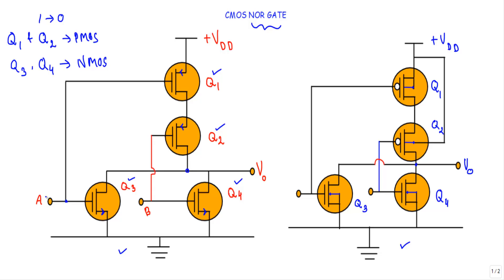The gate terminals of transistors Q1 and Q3 are connected together, and we are applying logical input A at that terminal. The gate terminals of transistors Q2 and Q4 are connected together, and we are applying logical input B at that terminal.